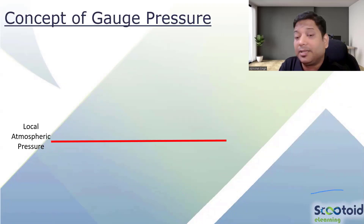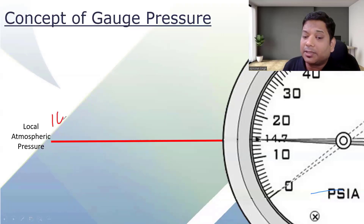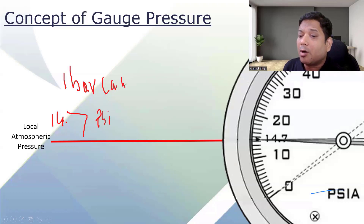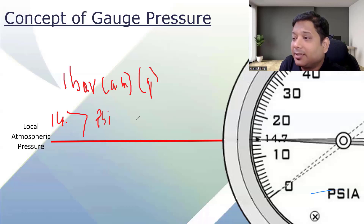Gauge bar and absolute bar — many times I've seen engineers getting confused with bar and bar absolute gauge. So let's discuss a little bit about that. Local atmospheric pressure is roughly 14.7 psi. Now for just two or three minutes, let's forget there is something like gauge at all — forget the concept of gauge entirely.